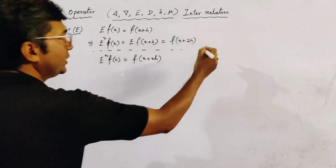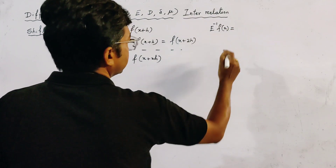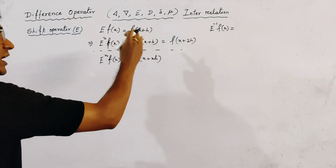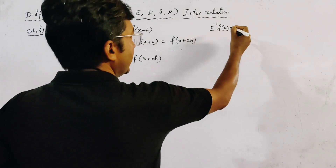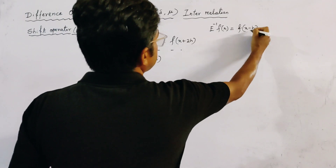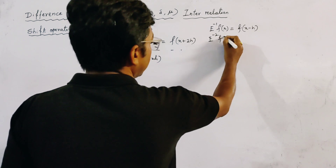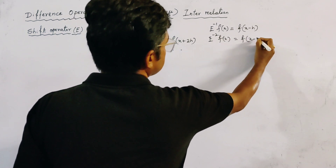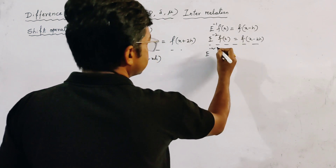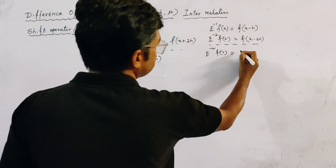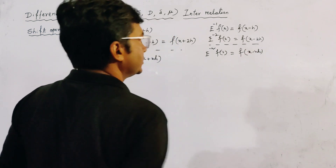Similarly, we define E inverse of f(x). This operator shifts f(x) to the left by one unit, and is given by f(x - h). So we get E to the power minus 2 of f(x) equal to f(x - 2h), and so on — E to the power minus n of f(x) equals f(x - nh).